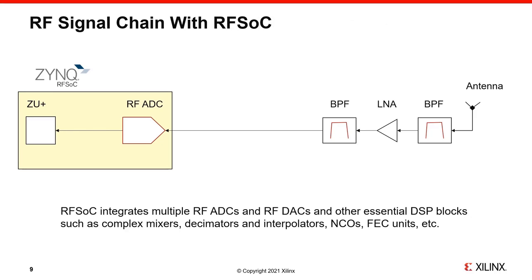This slide shows how RFSOC integrates the FPGA and the ARM processing subsystem, dramatically simplifying the receiver chain. We no longer require JESD interfaces between the FPGA and the RF-ADC because all of that is integrated inside the RFSOC. This simplification applies not just to a single receive channel — with MIMO, beamforming, and many other multi-channel architectures, the benefit of RFSOC multiplies with the number of ADCs. The same argument holds for the transmit channel, where we simply substitute RF-DACs for RF-ADCs.